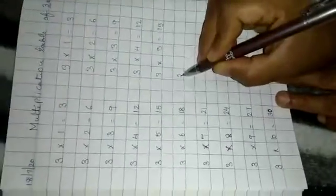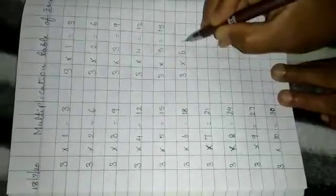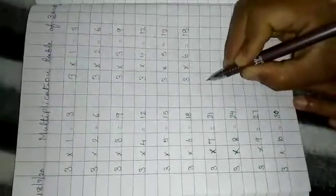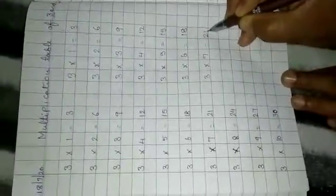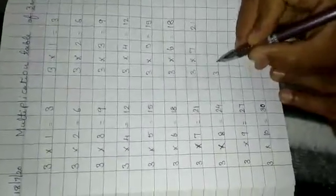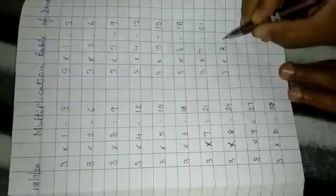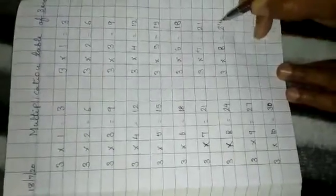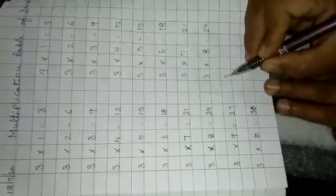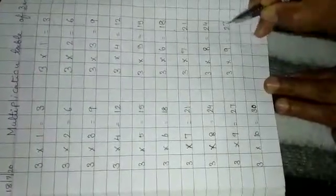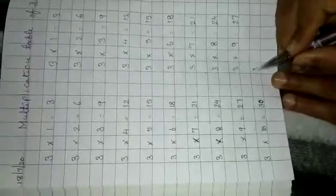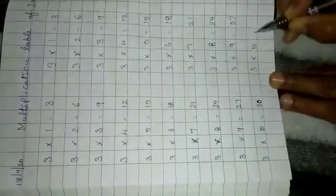3 6s are 18. 3 7s are 21. 3 8s are 24. 3 9s are 27. 3 10s are 30.